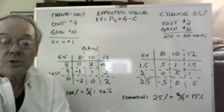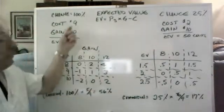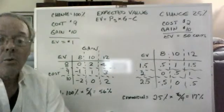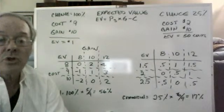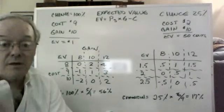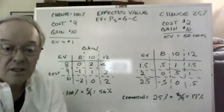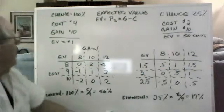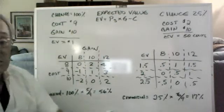We also talked about this simple example I've got posted up here on the board behind my head where we had no concern about probability of failure. Our confidence of success was 100%. That was where it cost $9 and you get $10.